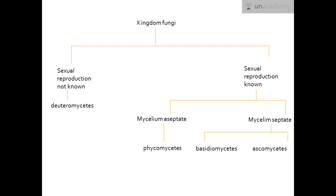They are first divided on the basis of whether they can do sexual reproduction or not. Deuteromycetes are the ones that cannot do sexual reproduction, and hence they are known as imperfect fungi. Those that can do sexual reproduction are further divided into two types based on their mycelium.